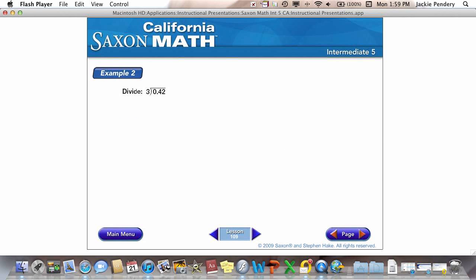Example 2. .42 divided by 3. Now, they have the 0 here and you can just bring that decimal straight up. That's fine. I'm taking the 0 out. You don't necessarily need it. But I am going to bring my decimal straight up.